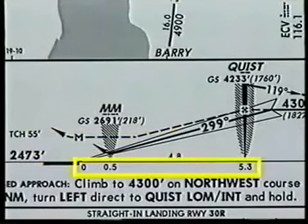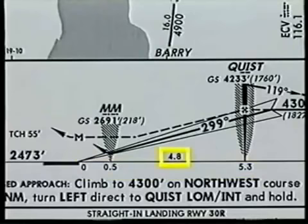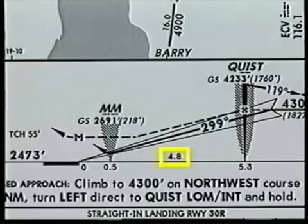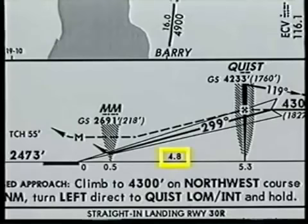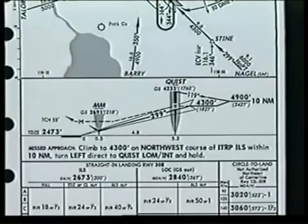Two sets of nautical mile distances are located near the bottom of the profile view. The numbers below the line relate to the distance from the landing threshold, as noted by the zero at the runway symbol. Those above the line represent nautical mileage between fixes. In this case, the distance between the locator outer marker and the middle marker is 4.8 nautical miles. While this profile view is typical of most ILS approaches, it's important to look at a few variations.